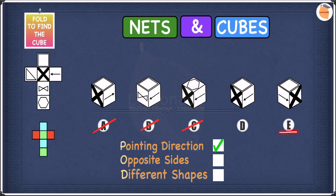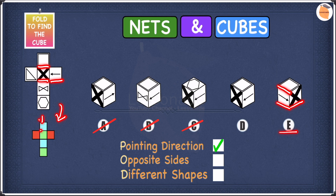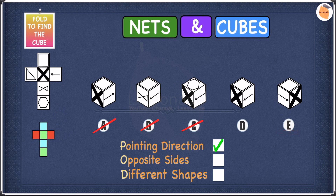Let's move to E. In E we have the same shapes: an arrow, an X, and a square. Looking at the net, we have the square, the arrow, and the X. In terms of opposite sides, we have the square at the top, the X in the middle, and the arrow towards the right. All of these shapes are in different colors, meaning none of them are on opposite sides, so we keep E as well. We managed to cross off C. Let's put a tick next to opposite sides and move to different shapes.